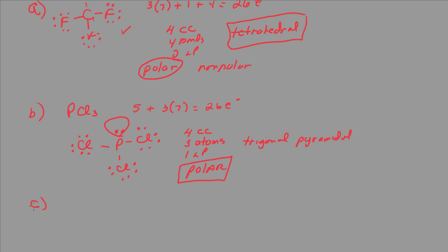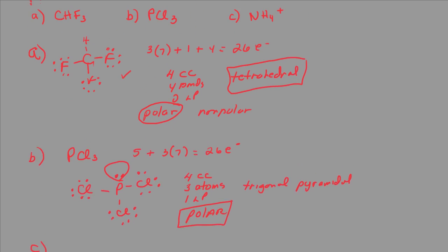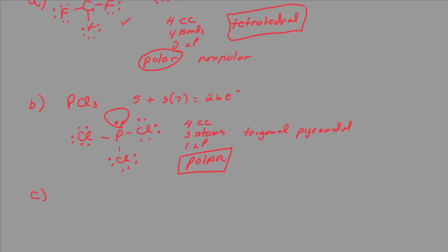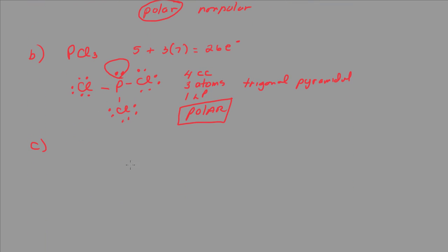All right, let's take a look at C. C was the ammonium ion. So let me get that written out here, and let's count the number of valence electrons. We have five for nitrogen, plus four for hydrogen, and minus one electron because of the positive charge.